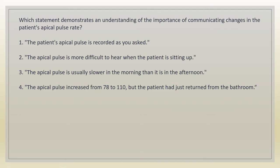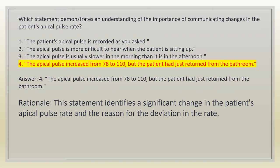Which statement demonstrates an understanding of the importance of communicating changes in the patient's apical pulse rate? 1. The patient's apical pulse is recorded as you asked. 2. The apical pulse is more difficult to hear when the patient is sitting up. 3. The apical pulse is usually slower in the morning than it is in the afternoon. 4. The apical pulse increased from 78 to 110, but the patient had just returned from the bathroom. Answer: 4. Rationale: this statement identifies a significant change in the patient's apical pulse rate and the reason for the deviation.